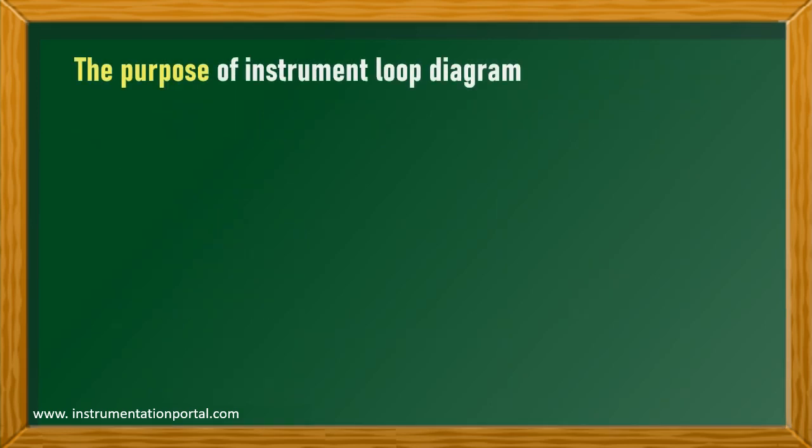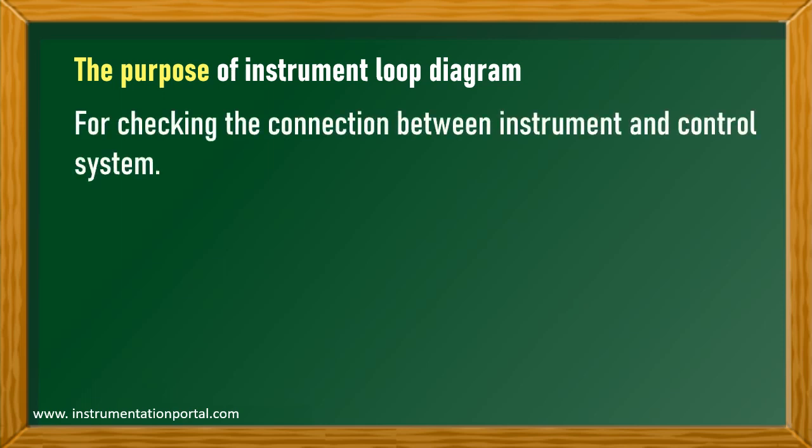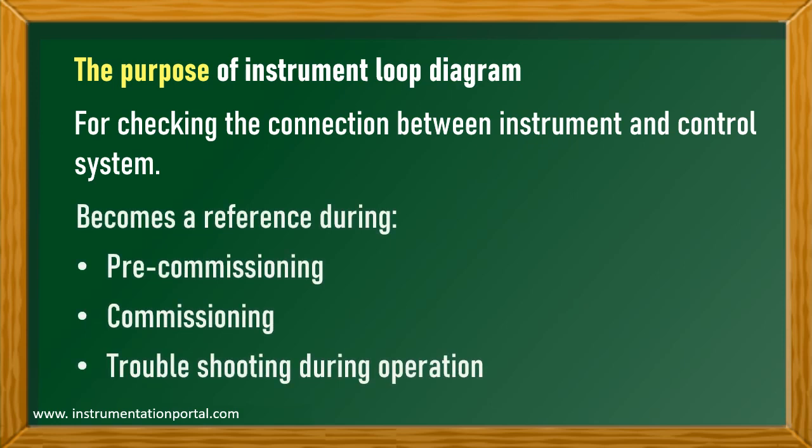The purpose of instrument loop diagram is for checking the connection between instrument and control system. It becomes a reference during pre-commissioning, commissioning, and troubleshooting during operation.